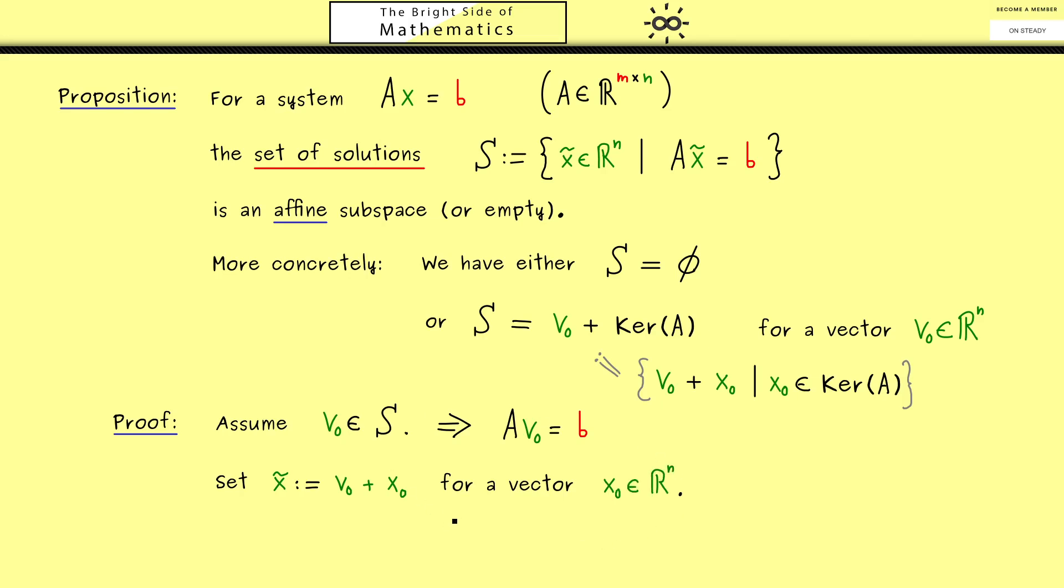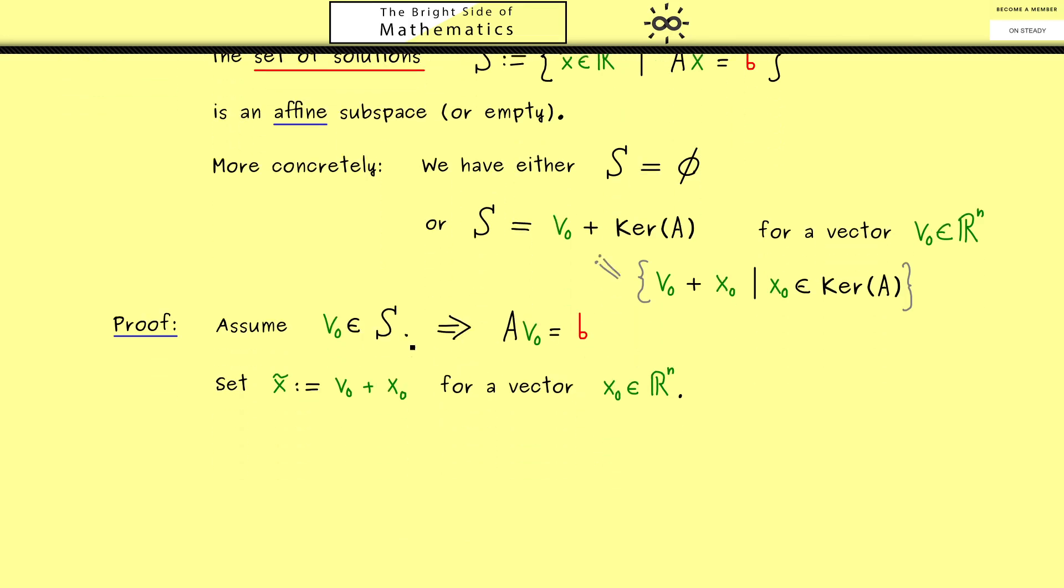Because with this definition we now have to show that x tilde is a solution if and only if x_0 lies in the kernel of A. In other words, by using this definition here we now have to show an equivalence. And we start on the left hand side that x tilde is an element of S.